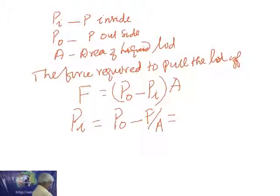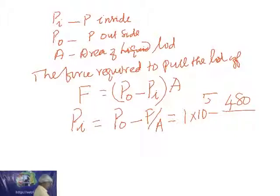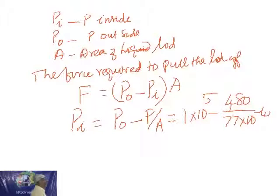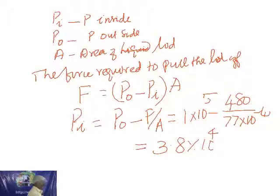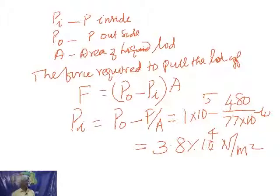Given: PO equals 1 into 10 power 5, F equals 480 Newton, area equals 77 cm squared, converted to meter squared using 10 power minus 4. PI equals 1 into 10 power 5 minus 480 divided by 77 into 10 power minus 4. On simplification, the answer is 3.8 into 10 power 4 Newton per meter squared. This is the application of fluid statics — force equals pressure into area.